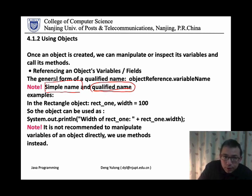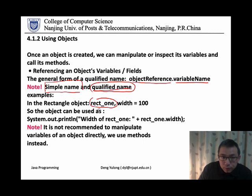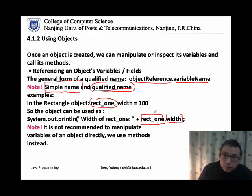How to write the qualified name — the form of the qualified name: we write it as the reference variable, dot, and the variable name. For example, the rectangle. Suppose we have created a reference variable rect1 to access the rectangle object inside memory. If we want to access the variable named width inside the rectangle, the qualified name is rect1 dot width. We can use this qualified name to access variables inside the object.